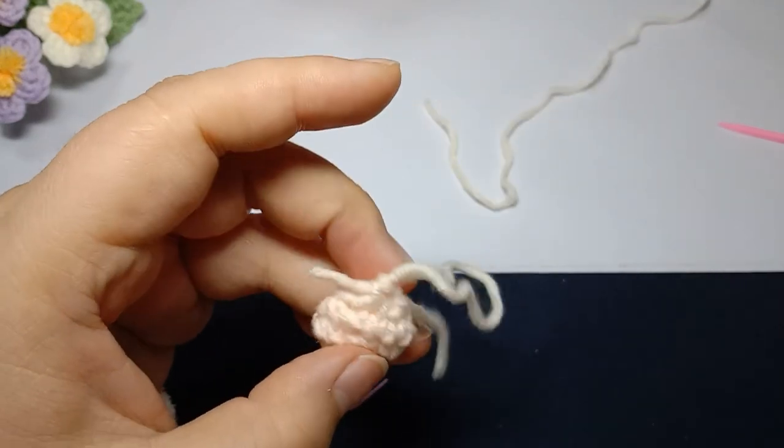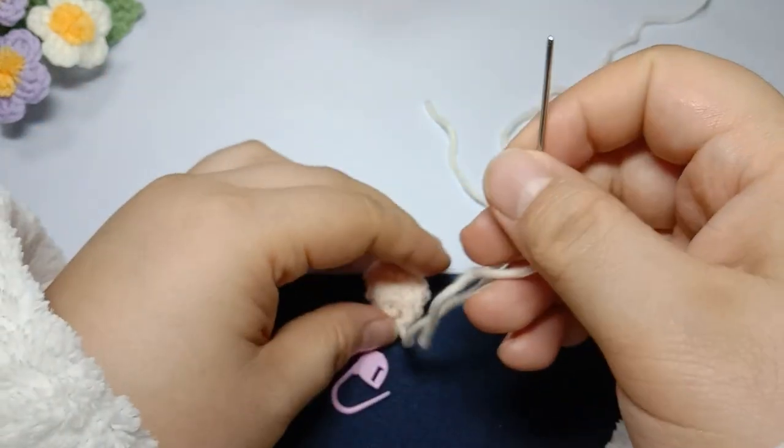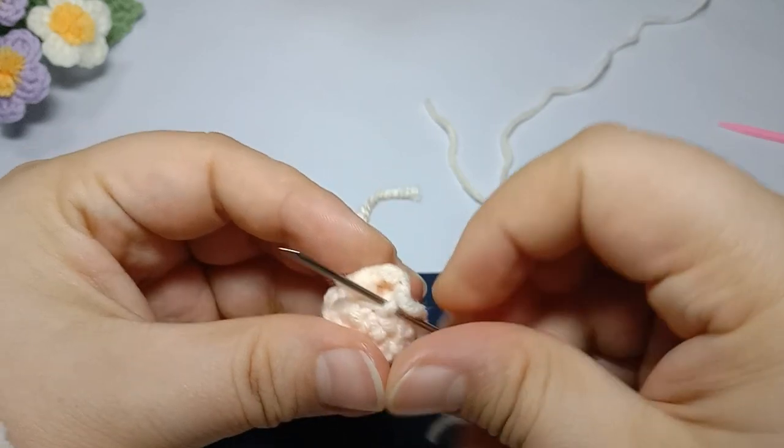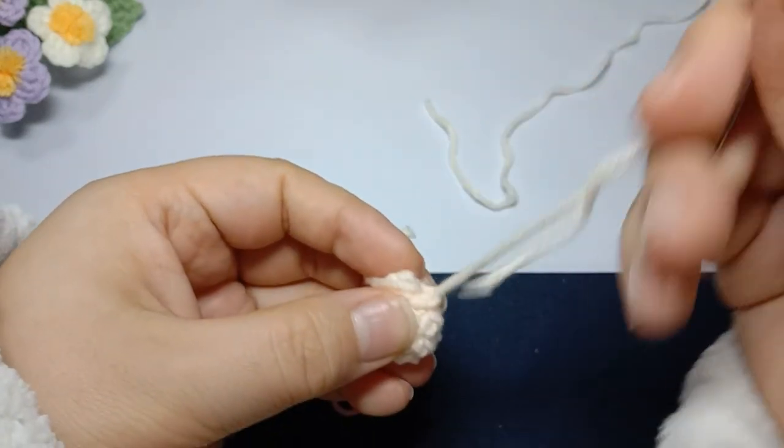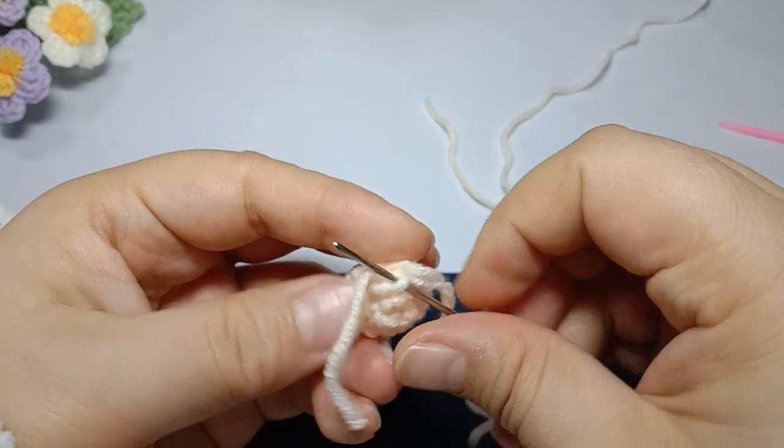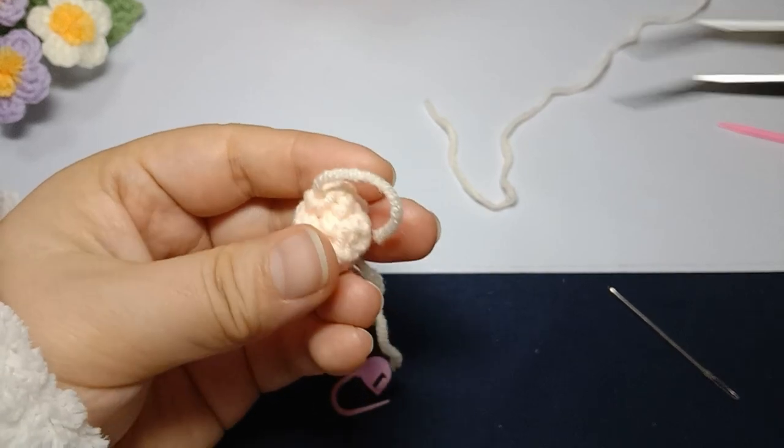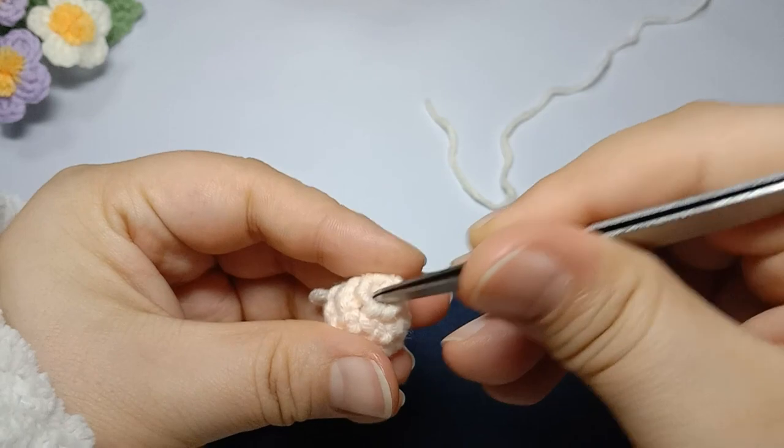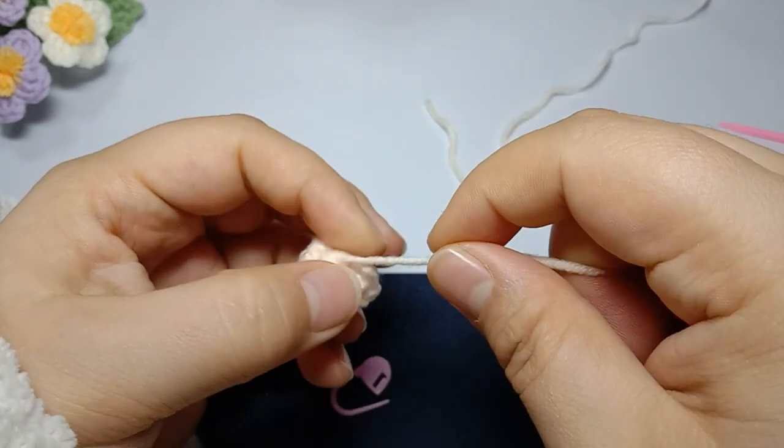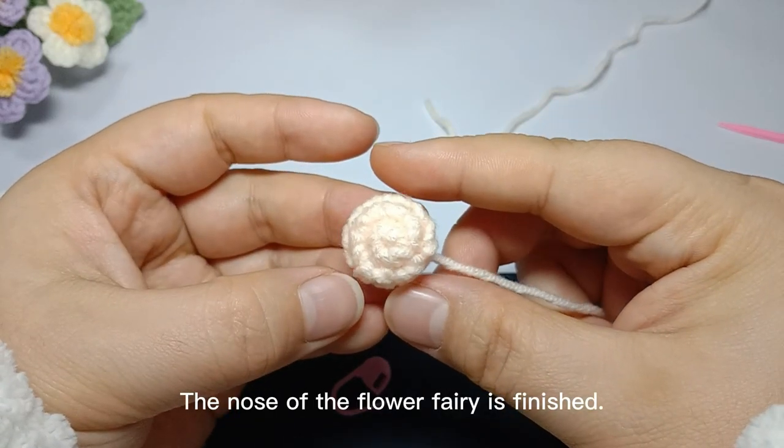Fasten off and weave in yarn tail. Pull the tail. The nose of the flower fairy is finished.